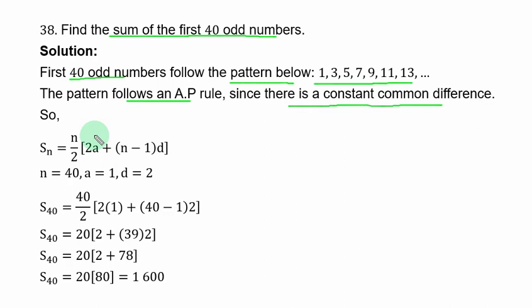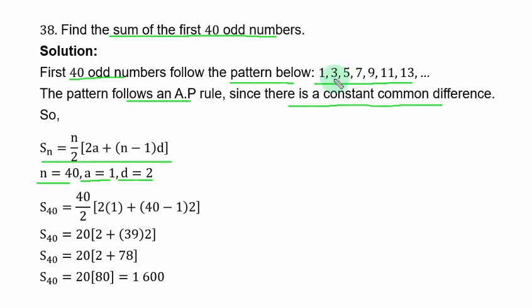The sum of the first 40 odd numbers can be obtained using the AP sum formula, where n is equal to 40, the first term a is equal to 1, and the common difference d is 2 (that is, 3 minus 1, or 5 minus 3). Replace n with 40, a with 1, and d with 2 in the formula.